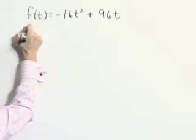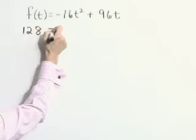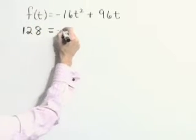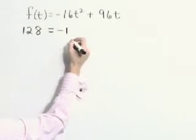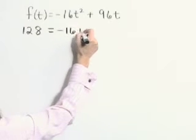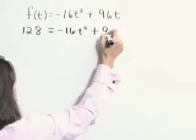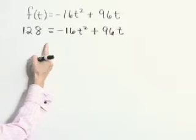So we're going to substitute 128 in for f(t), the height. So 128 = -16t² + 96t and now we're going to solve this equation.